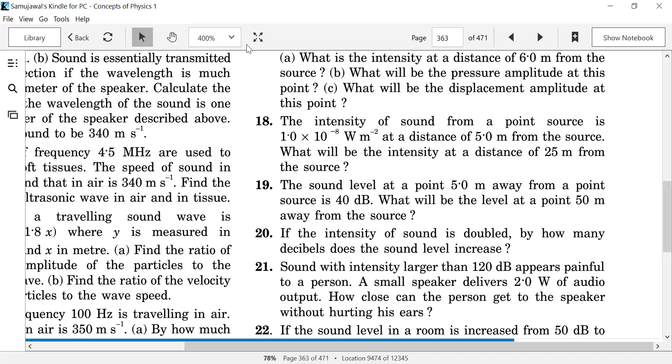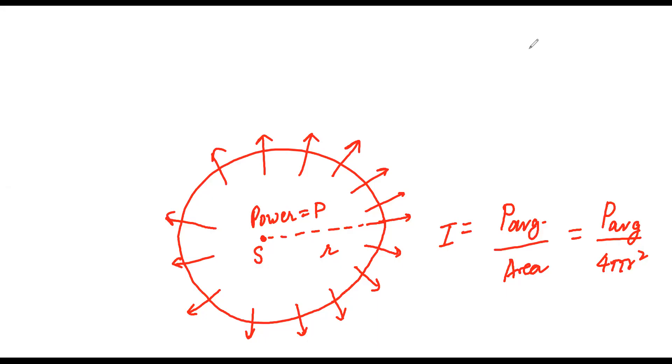Question number 18. Simple solution is: on this basis, what is the value of I₁? Power by 4πr₁². I₂? Power by 4πr₂². What happens if we take I₁ by I₂? Power by 4π is common.